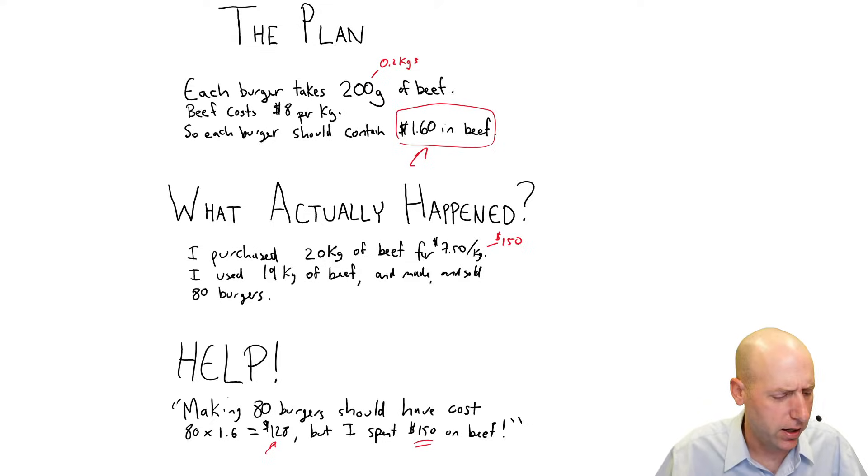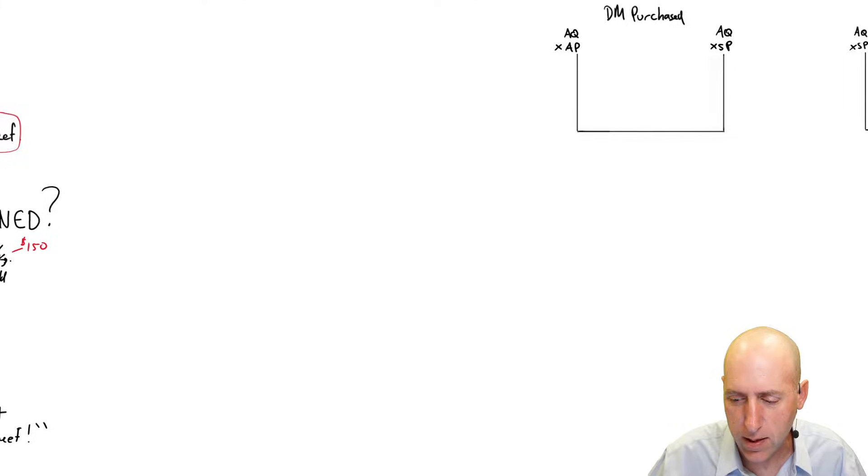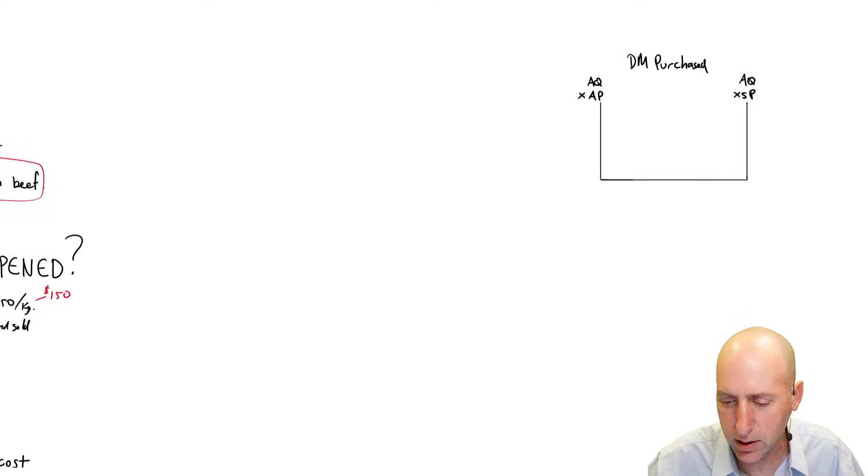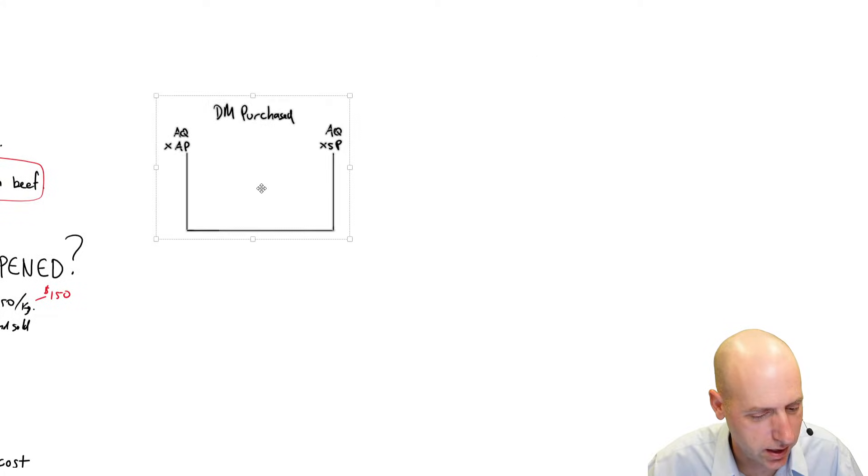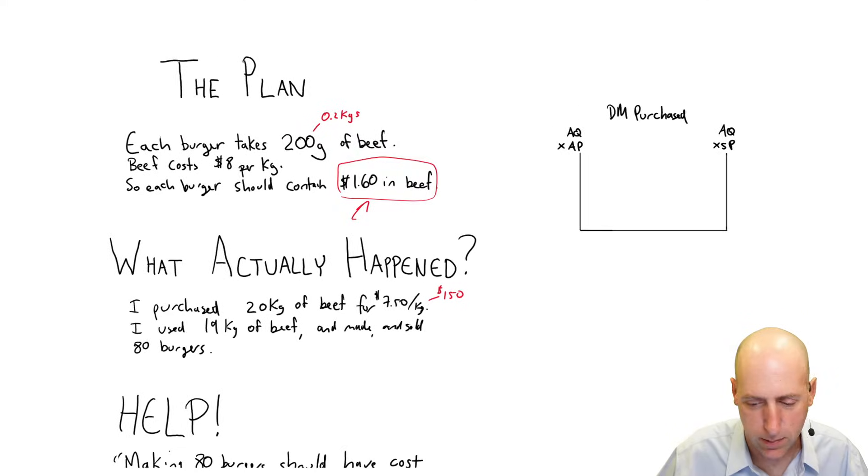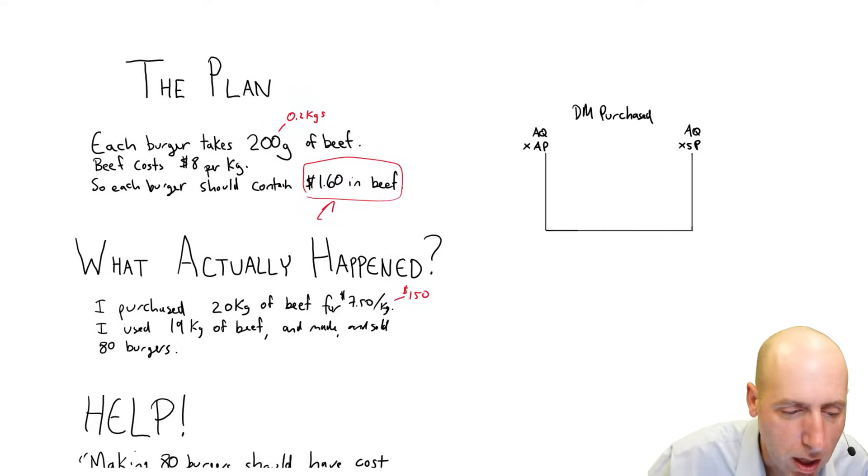So here's how we do a variance analysis. And I use these little tables. So we'll start with this one. So we'll start with his purchases, right? Did he blow the budget by making bad purchases? So let's start there with his purchases. So what did he actually purchase? Here's the way this little variance table works.